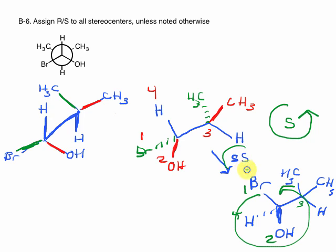We would normally say that this is S because we're going in a counterclockwise direction and number four is in the back. However, we did this single swap, and anytime you do a single swap, you invert R to S or S to R. This is the single swap of this, which means if this is S, this must be R. So this stereocenter is R.